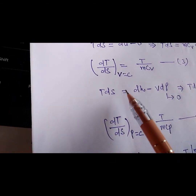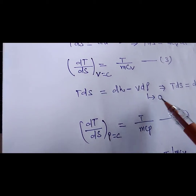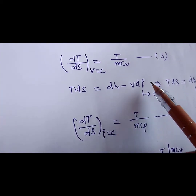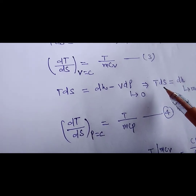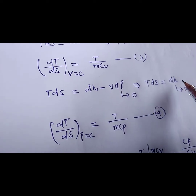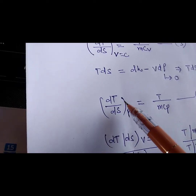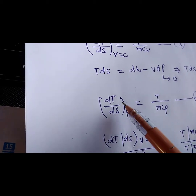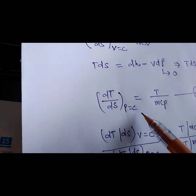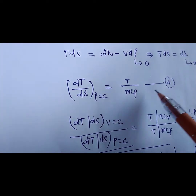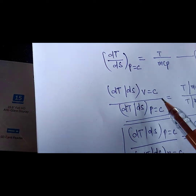Now taking the second TDS equation: TdS = dH − V·dP. At constant pressure, dP = 0, so TdS = dH. Since dH = m·CP·dT, the slope of the constant pressure line is dT/dS at constant pressure, which equals T divided by m·CP.